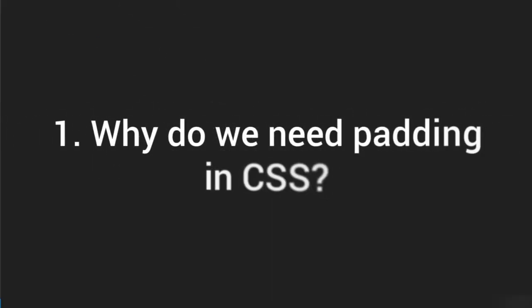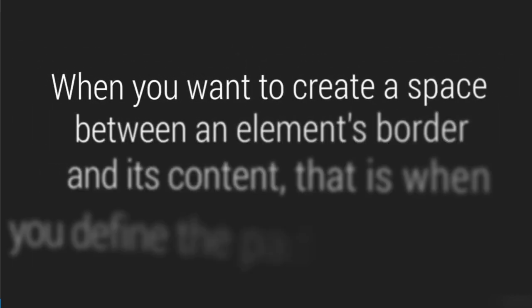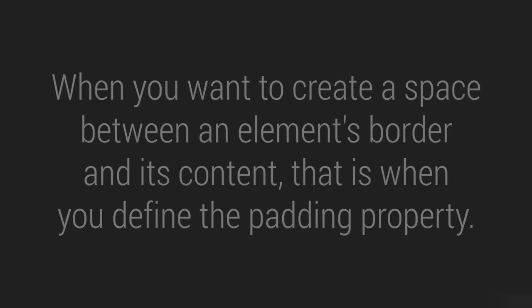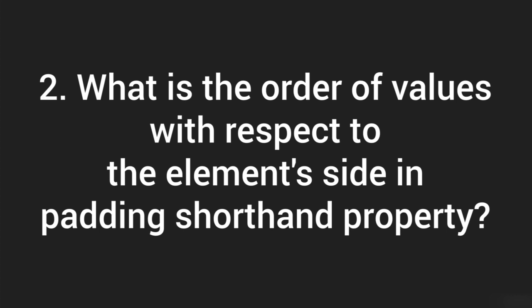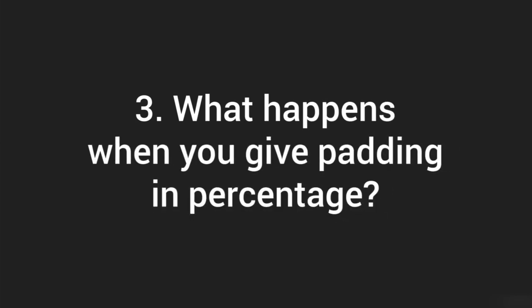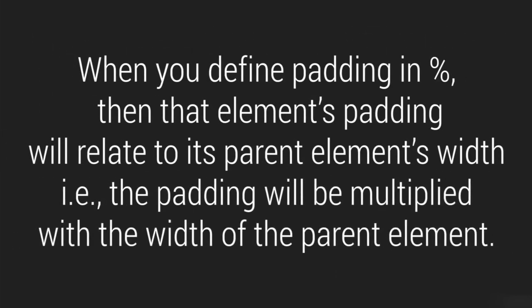Why do we need padding in CSS? When you want to create a space between the element's border and its content, that is where you define the padding property. What is the order of values in padding shorthand? The order is top, right, bottom, and left — TRBL — going in the clockwise direction. What happens when you give padding in percentage? The element's padding will relate to its parent element's width — the padding will be multiplied by the width of the parent element.